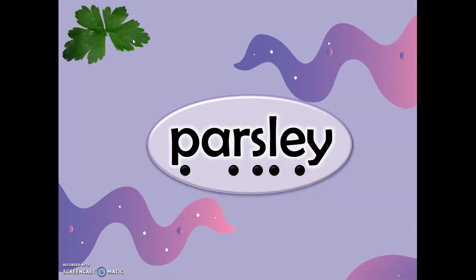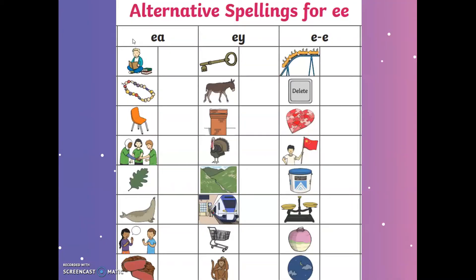Honey — yummy honey. And this one is parsley — it's this plant and we use it to garnish food. Very good, amazing job. Now it's time for our first writing activity. Get a piece of paper and a pencil and write with me. We have 'ea', 'ey', and the split digraph 'e_e'. We're going to look at the picture and then write the word together.